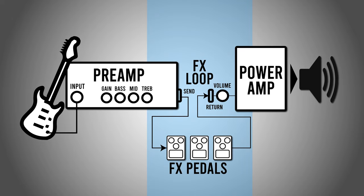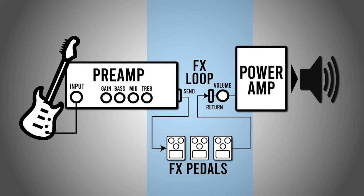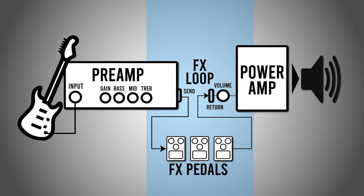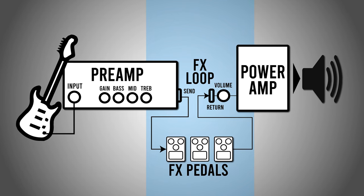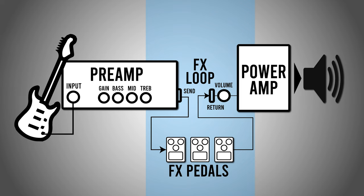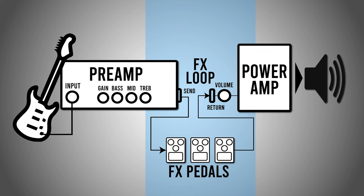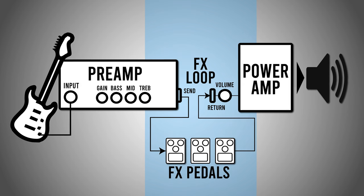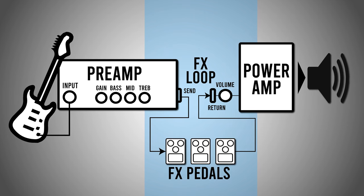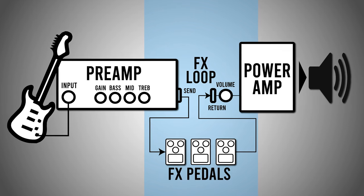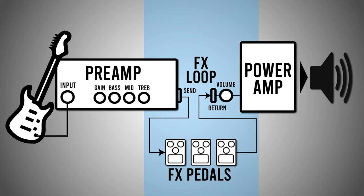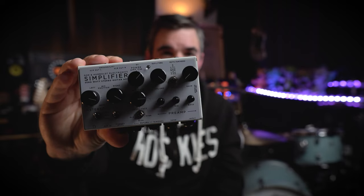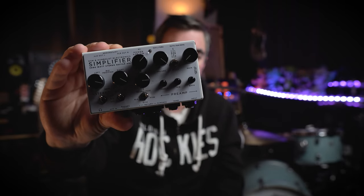If you aren't familiar with what an effects loop is, essentially it takes the signal in the amp after it hits the preamp but before it hits the power amp section, and sends it to whatever effects you might have in the effects loop, then returns it back into the amp where it hits the power amp section and ultimately the speaker.